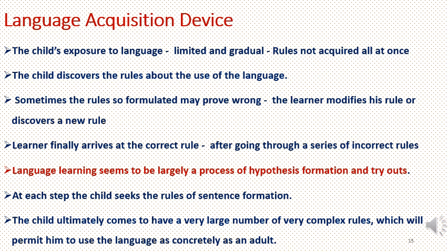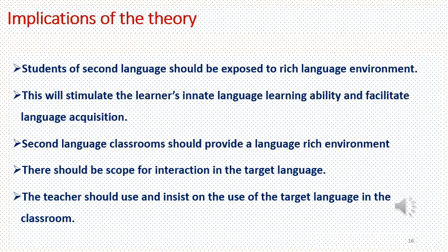According to Chomsky, language learning seems to be largely a process of hypothesis formation and tryouts. At each step, the child seems to be seeking rules of sentence formation, ultimately coming to have a very large number of complex rules that permit using the language as competently as an adult. Some implications of the innatist approach are: the innate language ability of the child should be exploited; students of a second language should be exposed to a rich language environment, which will stimulate the learner's innate language learning ability and facilitate language acquisition; and second language classrooms should provide a rich language environment.